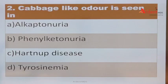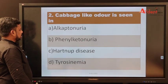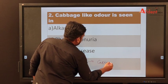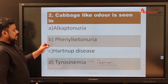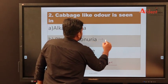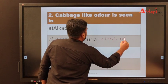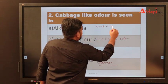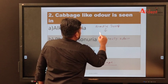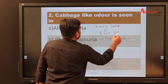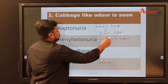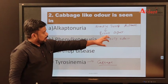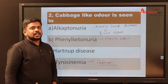Second question: cabbage-like odor is seen in which condition? The answer is tyrosinemia — accumulation of tyrosine gives a cabbage-like odor in the urine. In phenylketonuria, a mousy odor is observed. In maple syrup urine disease, the patient has a burnt sugar or maple syrup smell.